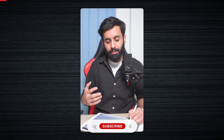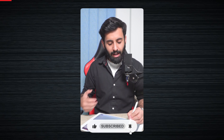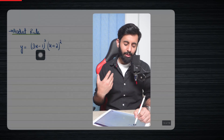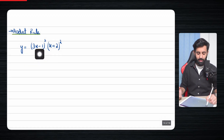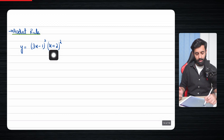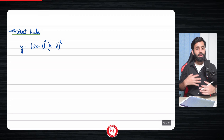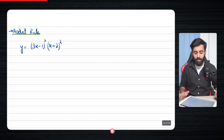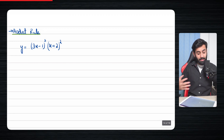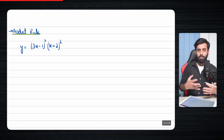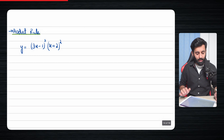In this video we're going to be starting something called the product rule. Basically, it's about how you differentiate when you have two expressions being multiplied such that you cannot actually multiply them and bring them down to a single expression. You may think we can expand (3x - 1)³ and (x + 2)², multiply, and then differentiate — and you're right, but it takes a lot of time. Also, if the power is a fraction, we don't know yet how to expand that, so that's when the product rule comes in really handy.